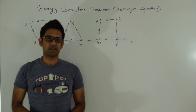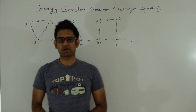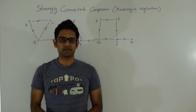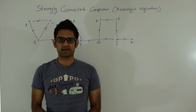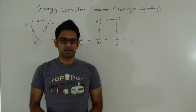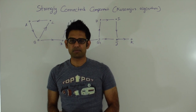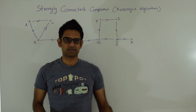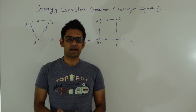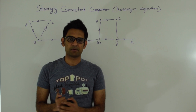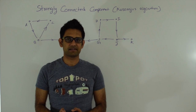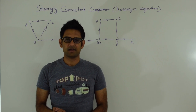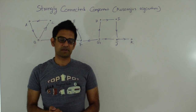What are possible applications of strongly connected components? One of them could be Facebook — Facebook is a graph of people, and they could use this algorithm to find all the strongly connected people and then look for common interests within that component.